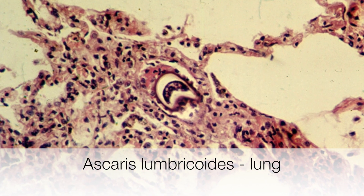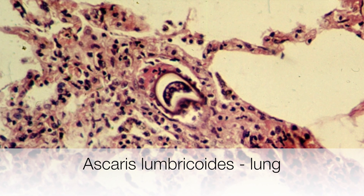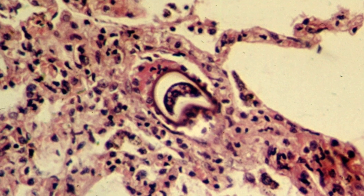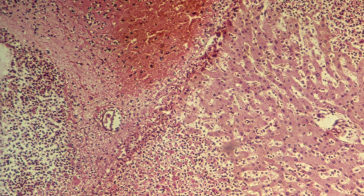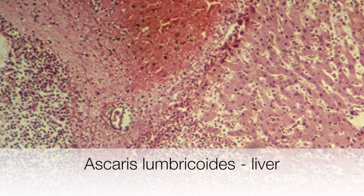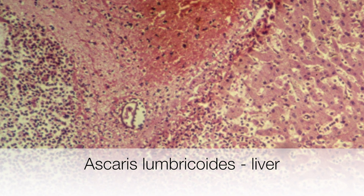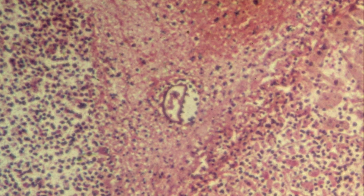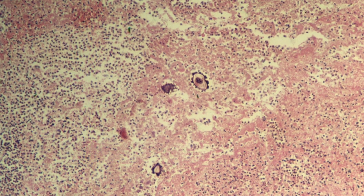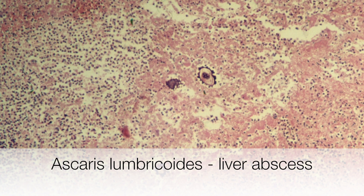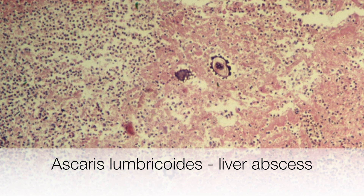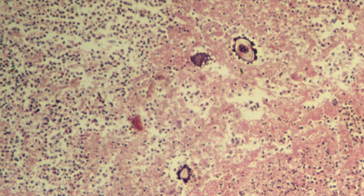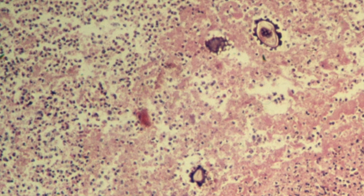This is a section of lung infiltrated by Ascaris lumbricoides. Here is a section of a liver showing Ascaris lumbricoides. In this section of liver you can see the Ascaris, and there is also a lot of acute inflammation indicative of a liver abscess.